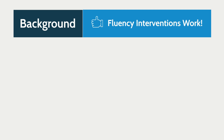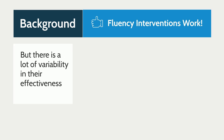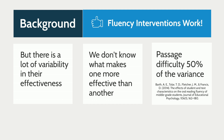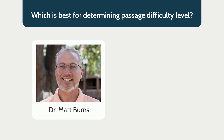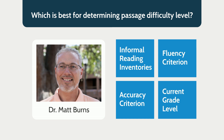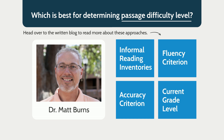We know that fluency interventions work, but there is a lot of variability in their effectiveness — meaning we don't know why one fluency intervention is more effective than another. However, a good place to start is examining passage difficulty, because passage difficulty accounted for about 50 percent of the variance in the effectiveness of these fluency interventions. That's why Dr. Matt Burns decided to investigate which of four criteria or measures we should use to determine text difficulty level — i.e., which one led to optimal student fluency growth.